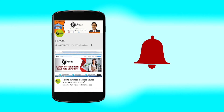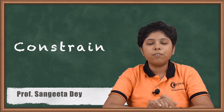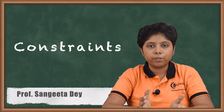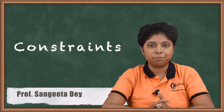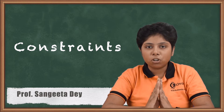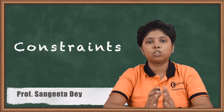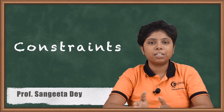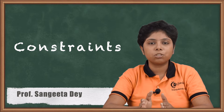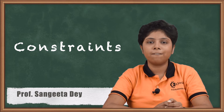Hello friends, today we will talk about the constraints on an ER model or Entity Relationship model. There are certain constraints to which the contents of a database must conform. We will talk about the mapping cardinalities constraint and also the participation constraints.